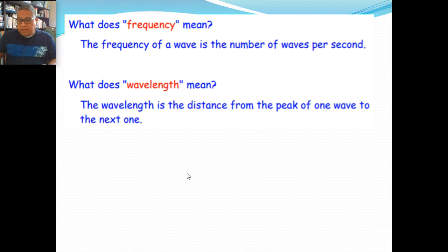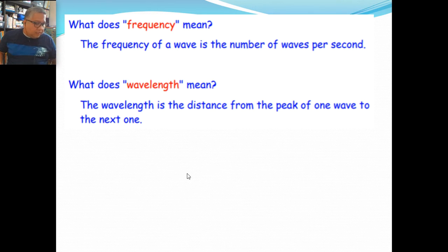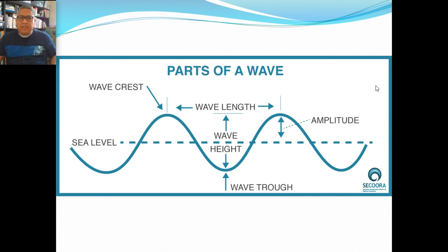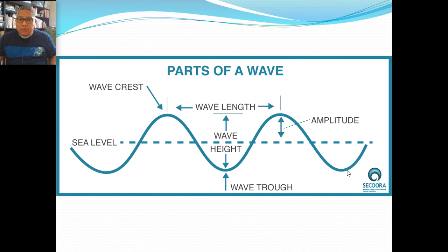Now, what is a wavelength? A wavelength is from crest to crest — meaning from the highest point to the highest point — or trough to trough, from the lowest point to the lowest point.